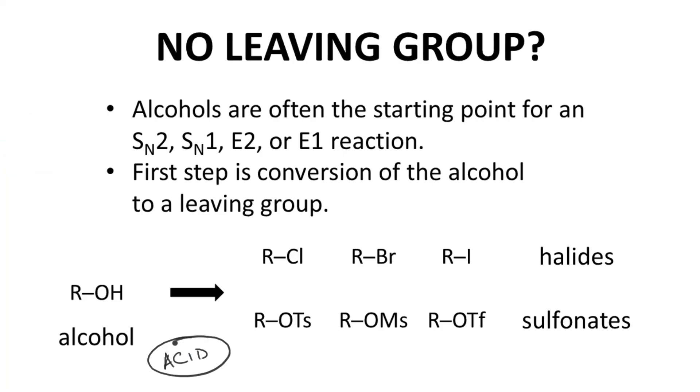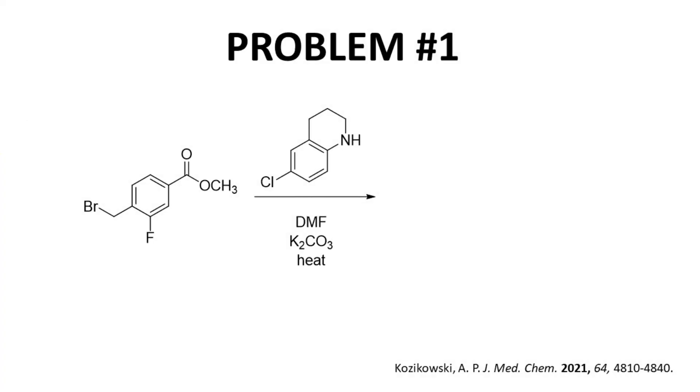OK, let's see some problems. First problem. We have a primary halide. Over the arrow is an amine. Amines are both nucleophilic and basic. Since we have a primary leaving group, if you go back to the table on the first slide, you'll see that this reaction should favor an SN2 reaction. The amine will act as a nucleophile and will kick out the bromide.